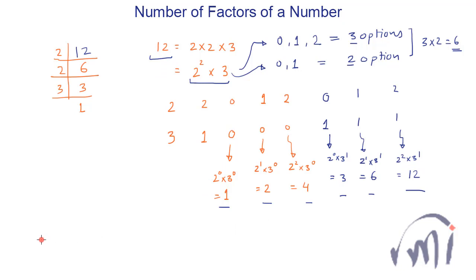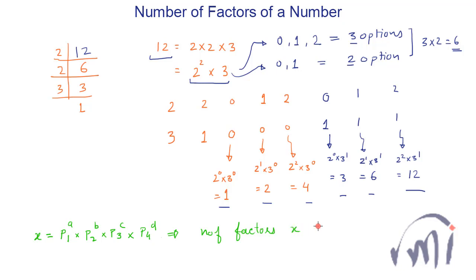So you can see that if you have a number x represented as a product of prime numbers where prime number p1 appears a times, p2 appears b times, p3 appears c times, and p4 appears d times, then the number of factors of x will be (a+1)(b+1)(c+1)(d+1). And if there is a fifth prime number appearing e times, you multiply by (e+1) as well.